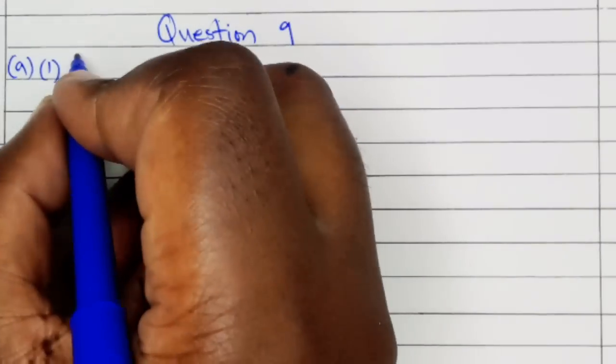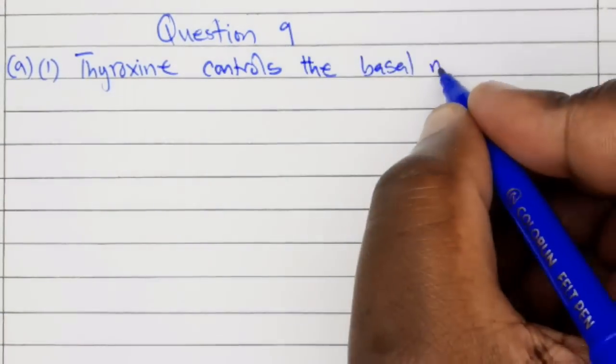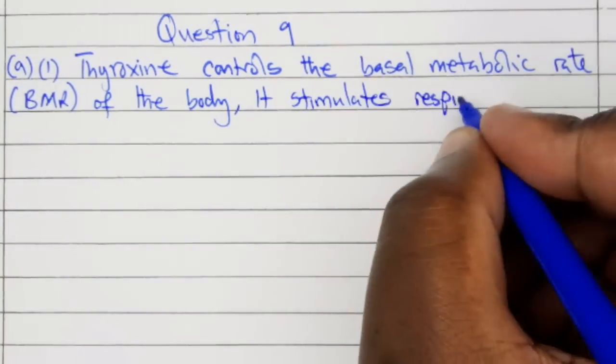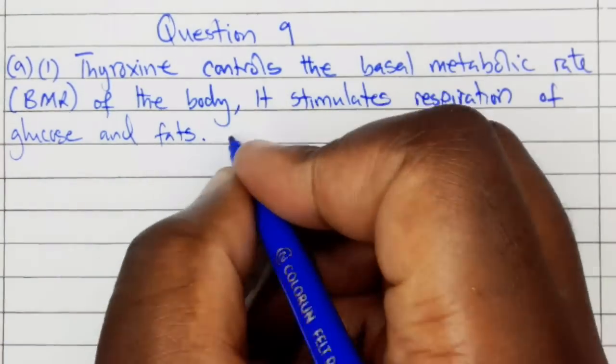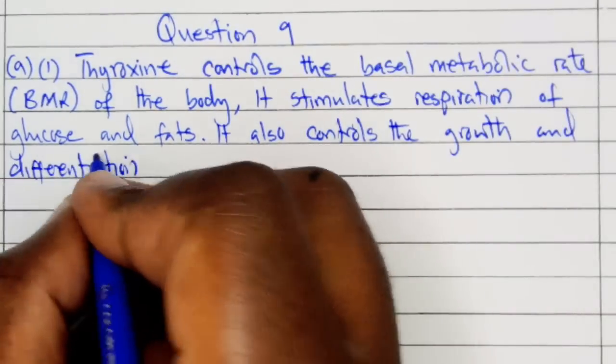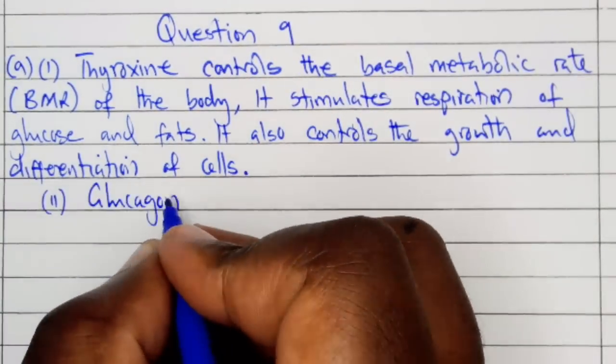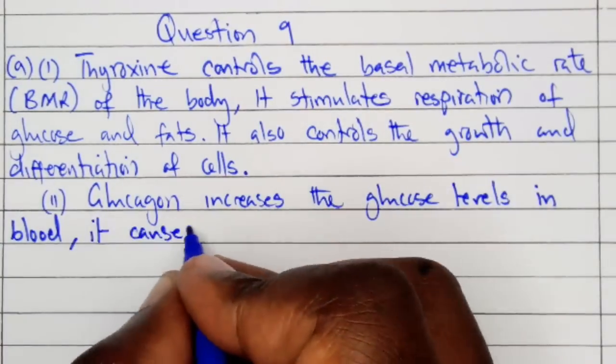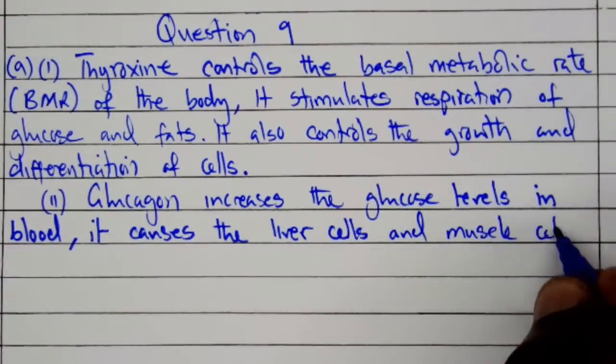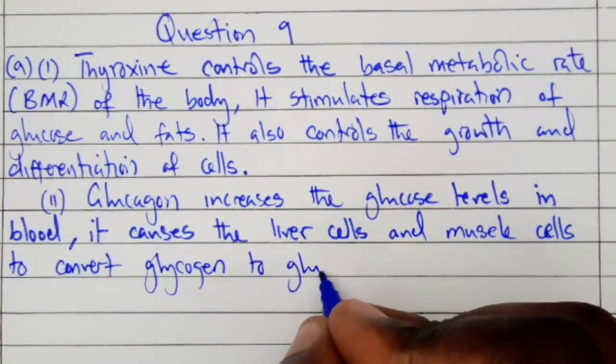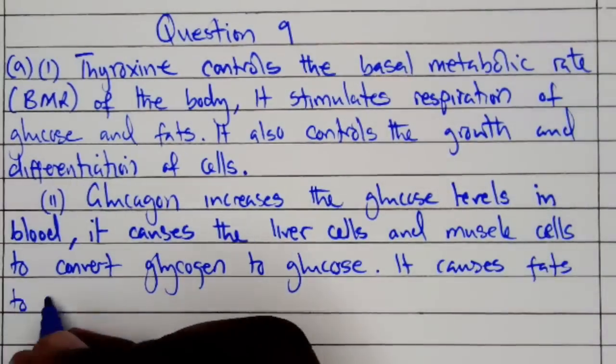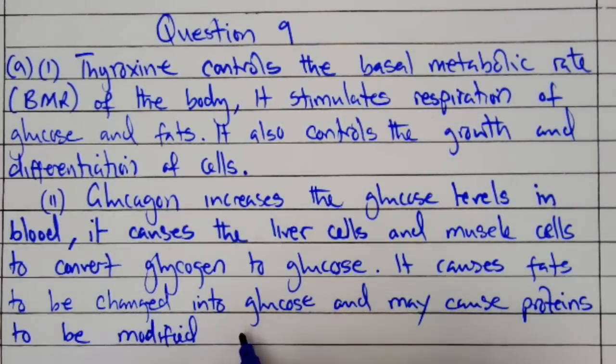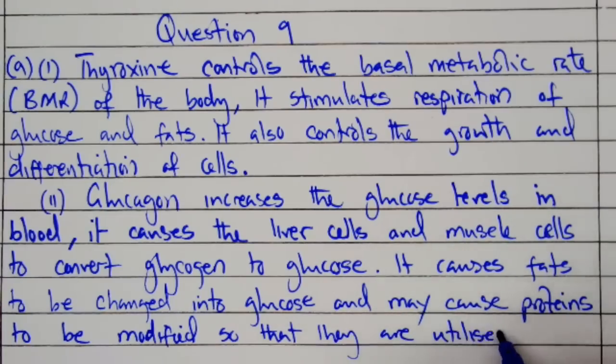Answers to question number 9A1: Thyroxine controls the basal metabolic rate of the body. It stimulates respiration of glucose and fats. It also controls the growth and differentiation of cells. Part A2: Glucagon increases the glucose levels in blood. It causes the liver cells and muscle cells to convert glycogen to glucose. It causes fats to be changed into glucose and may cause proteins to be modified so that they are utilized for energy production during starvation.